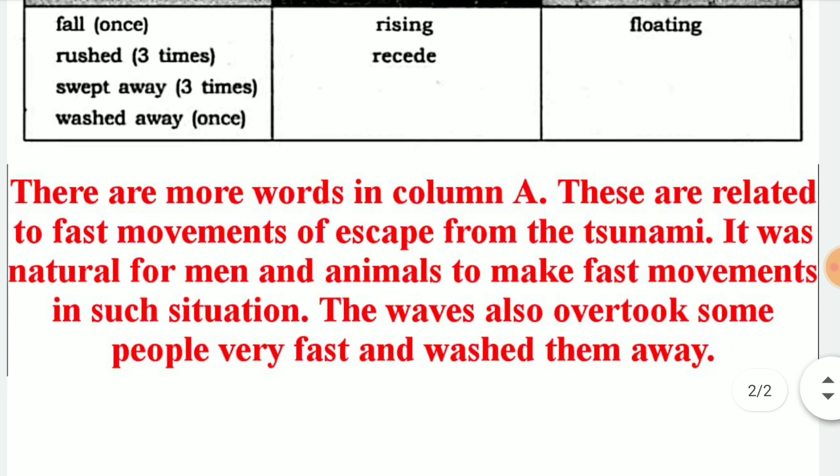There are more words in column A. These are related to fast movements of escape from the tsunami. It was natural for men and animals to make fast movements in such situations — like to fall, rush, rustle, and washed away. The waves also overtook some people very fast and washed them away.